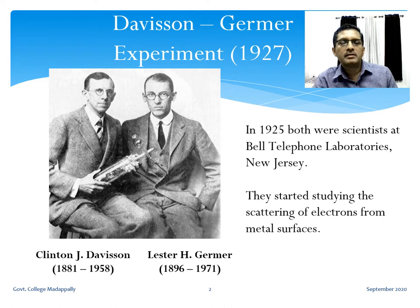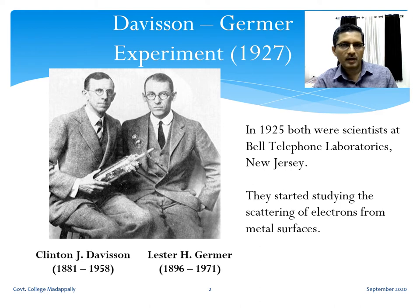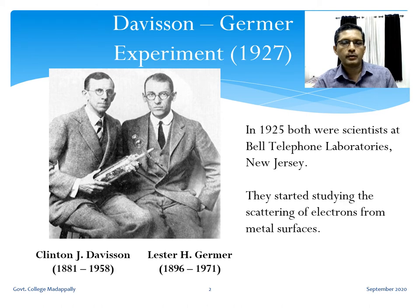Remember that de Broglie proposed his idea in 1923. Within four years, in 1927, two groups of experimentalists — one in the USA and the other in England — were able to produce diffraction of an electron beam.